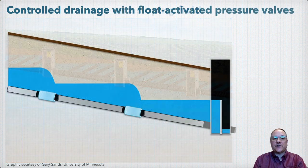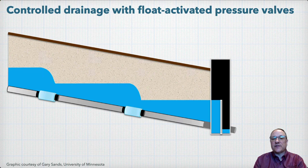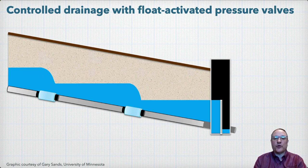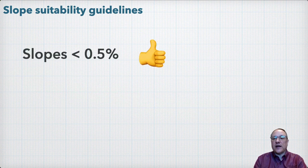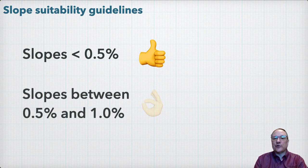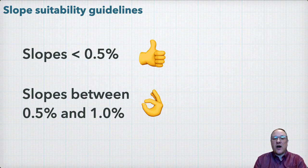A recent innovation is the use of float-activated pressure valves designed to hold a specified level of head behind them before opening for drainage when the water level rises above that. With one traditional control structure, these float-activated valves automatically respond based on the water level, making management much easier for fields requiring multiple control structures. A standard rule of thumb for field slopes is that slopes of less than 0.5% are ideal, and slopes up to 1% are considered suitable. The float-activated valves or developing automated structures may help push the envelope beyond 1% in some cases, but feasibility in terms of cost of additional control structures becomes more difficult beyond those 1% slopes.